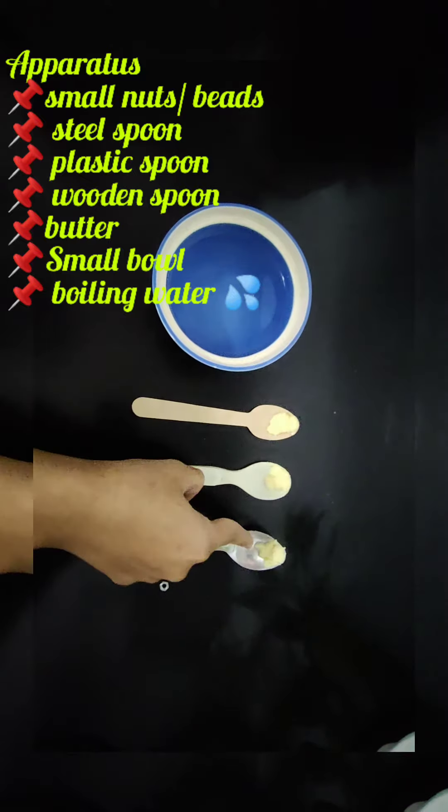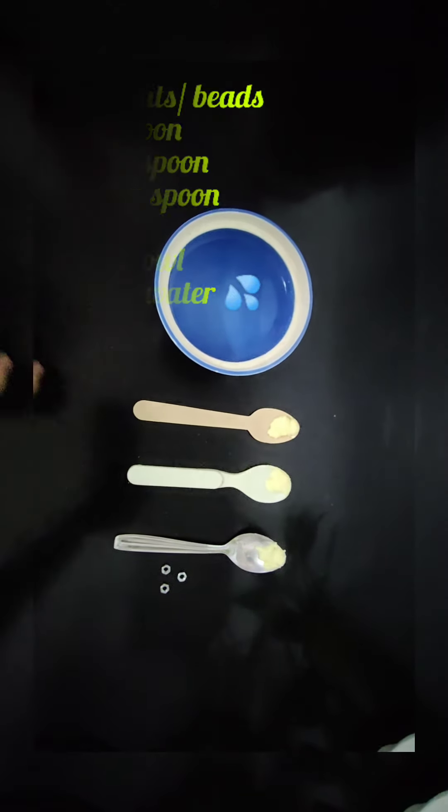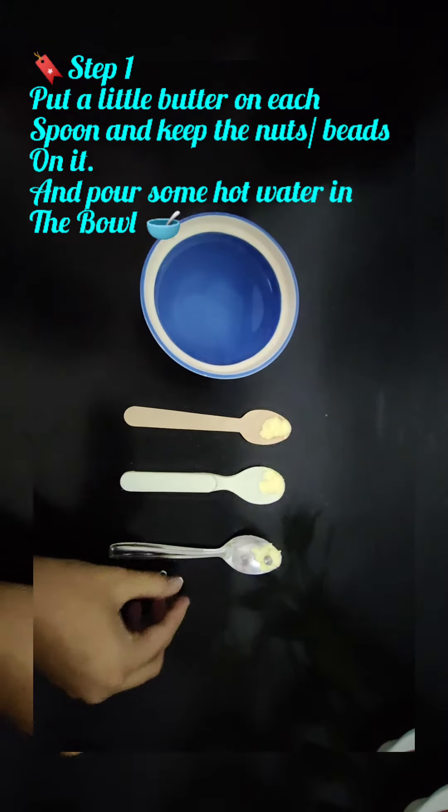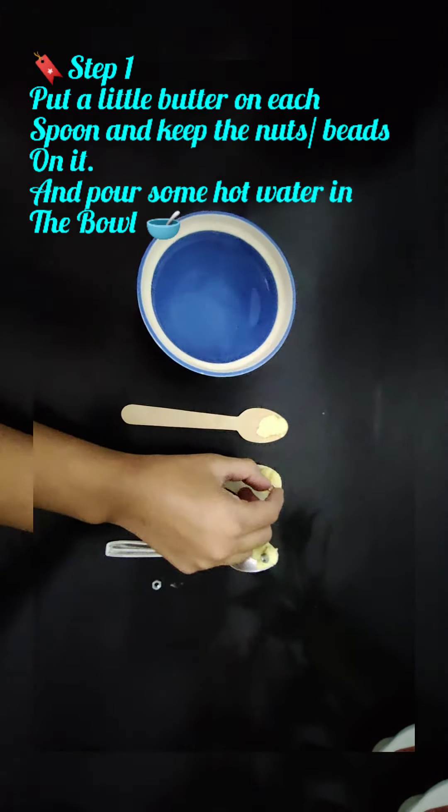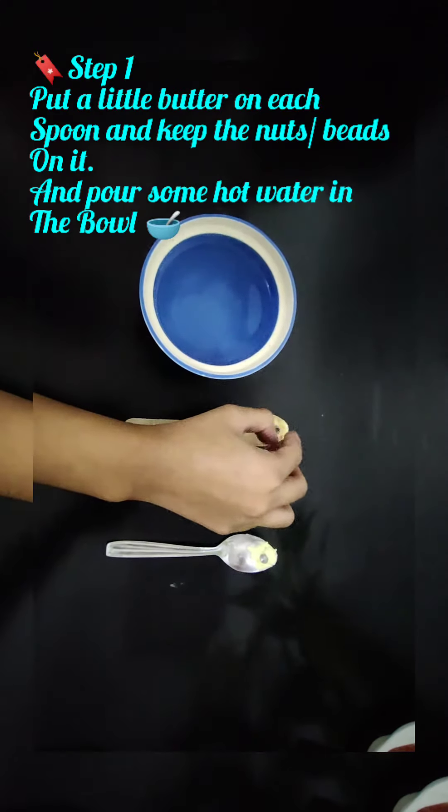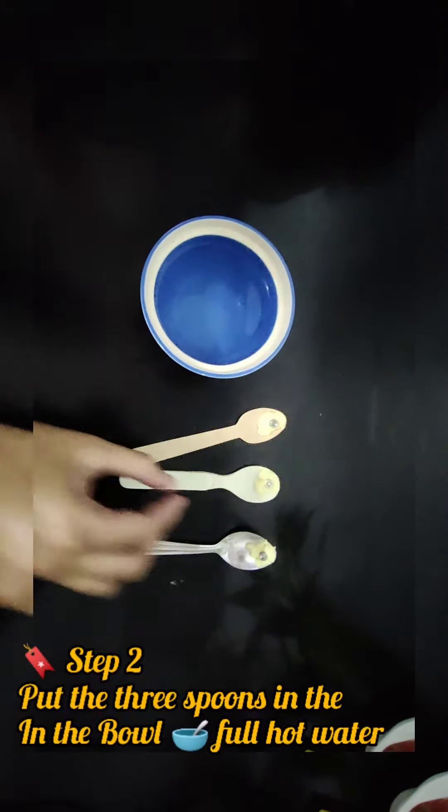I have put some butter on each of the spoons. Step 1: We will take the nuts or beads and put them on the butter, and then pour some hot water in the bowl.